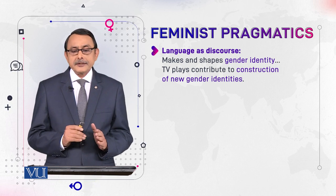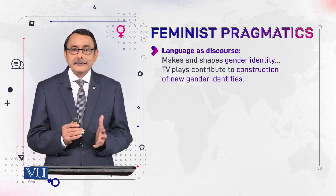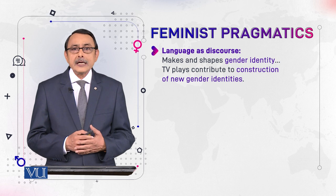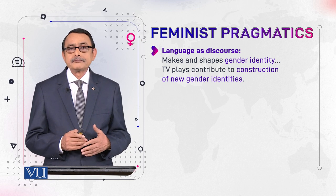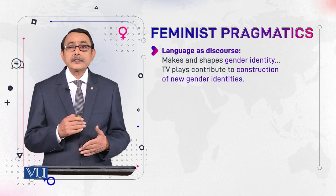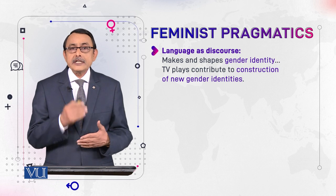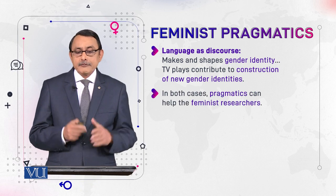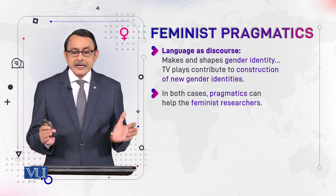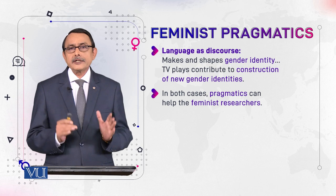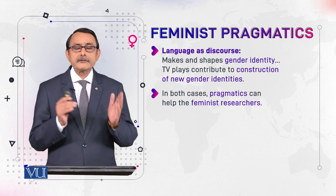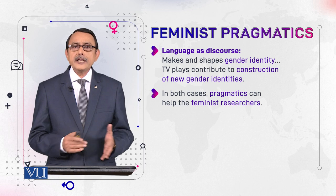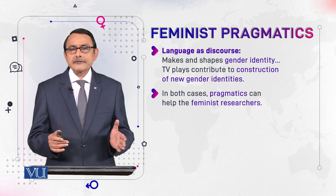When we use language as discourse, it makes and shapes gender identity and even new ideology and new narratives. Here language is very active and has a role of construction — it creates something. So this role is very active. In both cases, pragmatics can help feminist researchers, whether we are using language as a medium to express our thoughts or as discourse to shape, change, or transform our thoughts.